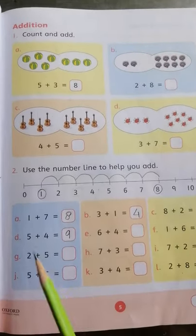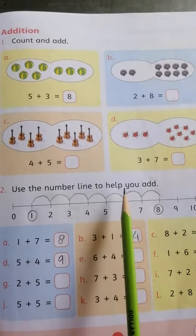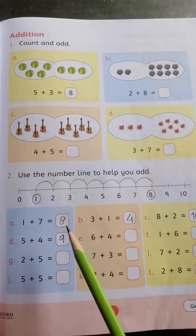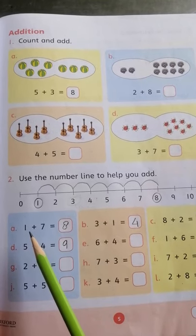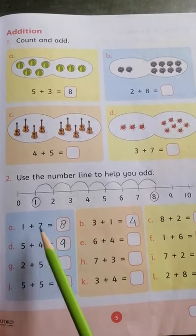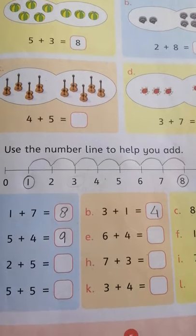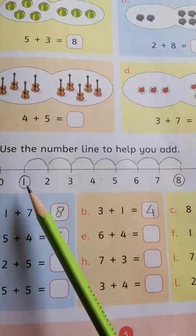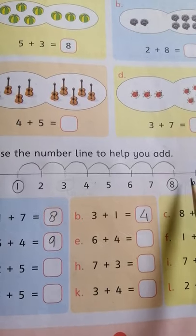Okay students in question number 2 you can see use the number line to help you add. In number line you can see in part A there is 1 plus 7. There is 1 plus 7. So we start with 1 and jump the 7 numbers to the right.